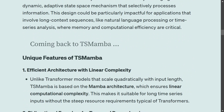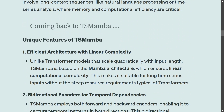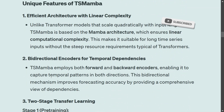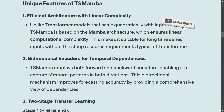Coming back to TS Mamba — as you may have understood, it is based on the Mamba architecture, which ensures linear computational complexity and is therefore more efficient. It uses bidirectional encoders for temporal dependencies. In time series, if you go from date 1 to date 31 of a month, the forward encoder looks from 1 to 31 and the backward encoder looks from 31 back to 1, as we will see in the architecture diagram.